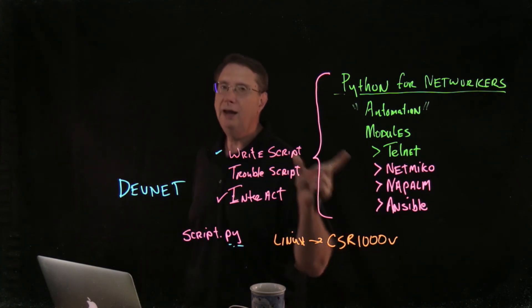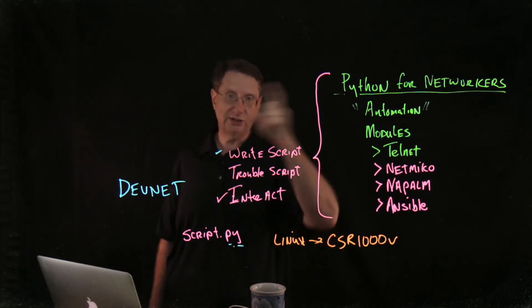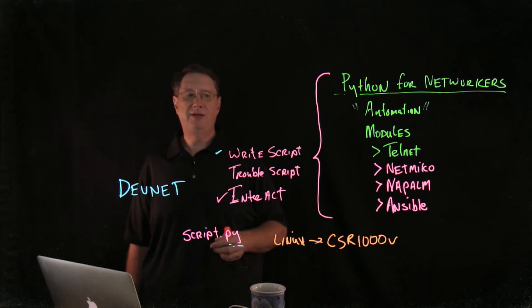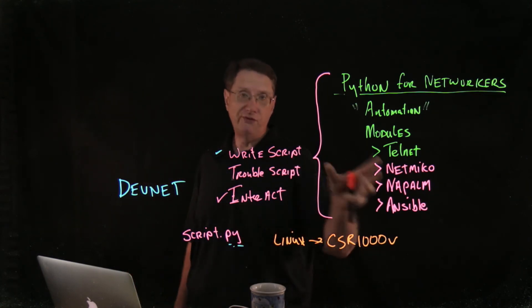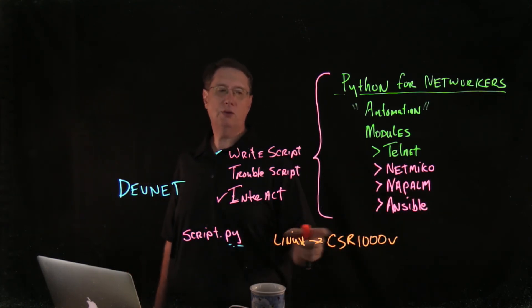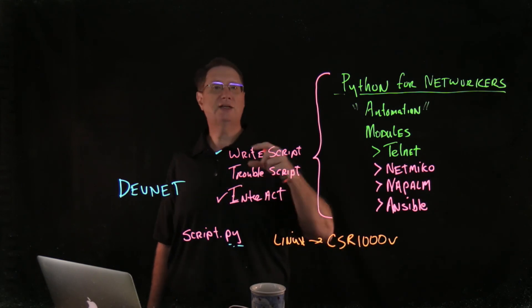In this specific class, I will be using Cisco CSR1000Vs in virtualization. And we'll be running an Ubuntu Linux desktop. And that Linux desktop is going to be the workstation that we're going to access in order to be able to configure these routers. Again, in the beginning, we're not going to be configuring anything.